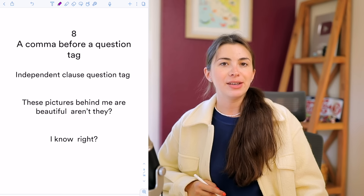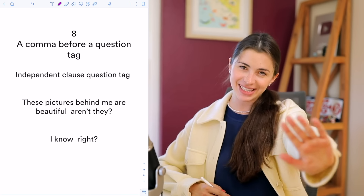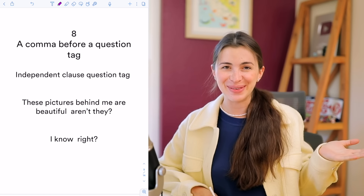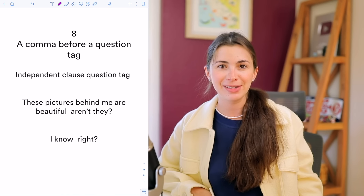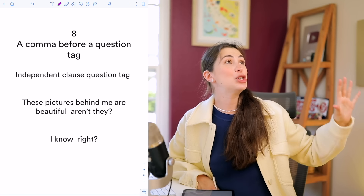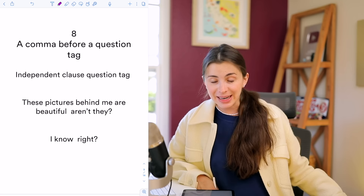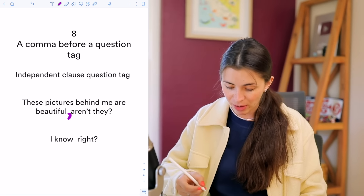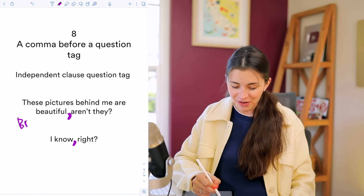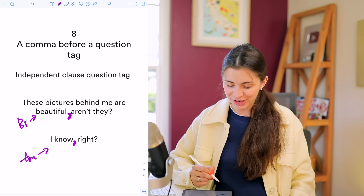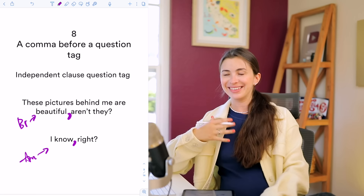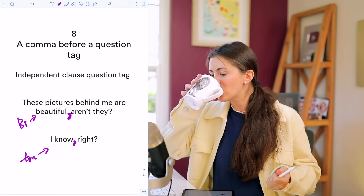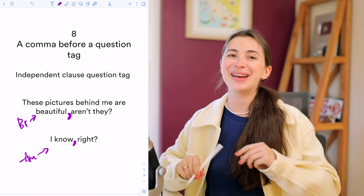The next rule involves tag questions. Examples: 'The food is amazing, isn't it?' 'This studio setup is beautiful, isn't it?' 'These pictures are beautiful, aren't they?' Before tag questions, we use a comma. There's also 'I know, right?' — that's a common American version. So we separate 'right' with a comma too.